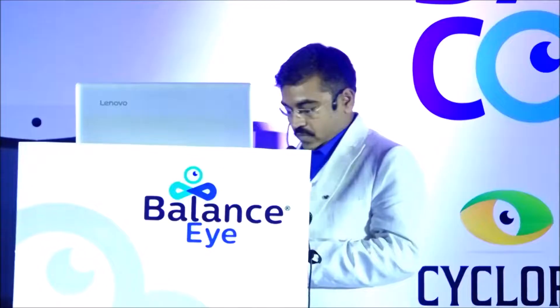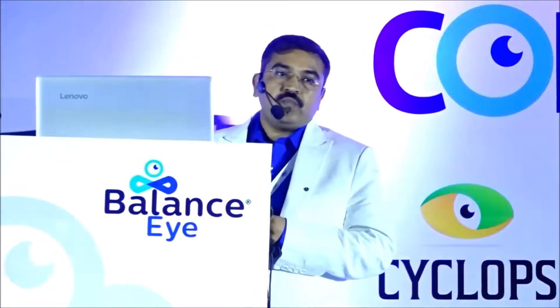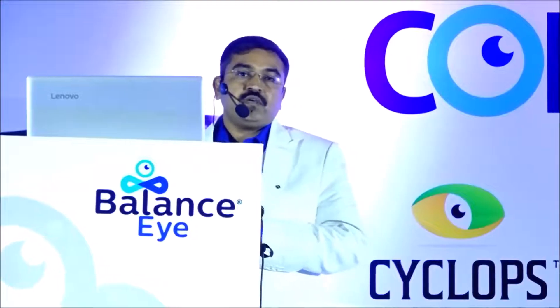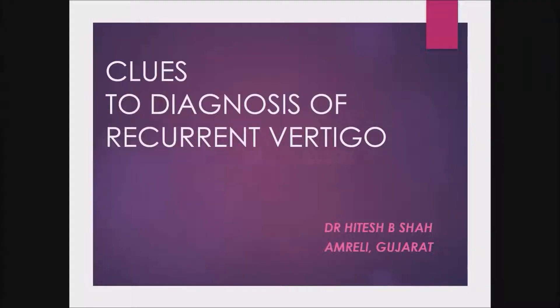Good morning. Today I would like to discuss clues to the diagnosis of recurrent episodic vertigo. Vertigo is a common problem that needs an organized approach. Despite all investigations, history remains the most important aspect in reaching a diagnosis. BPPV, migraine, and vascular vertigo are still major causes of vertigo, while anxiety and depression appear to be associated causes rather than true causes. Classification into central versus peripheral is useful, but mode of presentation — acute, chronic, recurrent, positional, or non-positional — is also important.